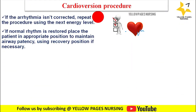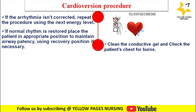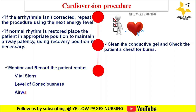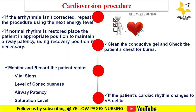If normal rhythm is restored, place the patient in an appropriate position to maintain airway patency, using the recovery position if necessary. Clean the conductive gel and check the patient's chest for burns. Monitor and record vital signs, level of consciousness, airway patency, and oxygen saturation. If the cardiac rhythm changes to ventricular fibrillation, change the mode from synchronized to defibrillation and defibrillate the patient.